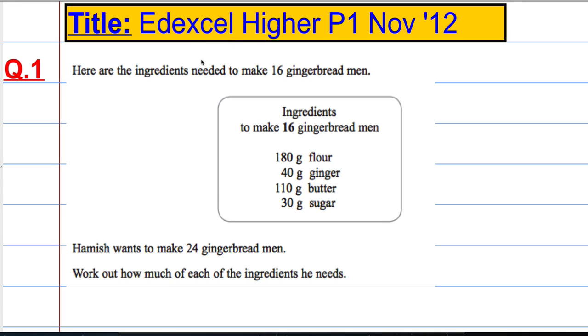Okay, here we go with the Edexcel Higher Paper 1 from November 2012, question 1. Here are the ingredients needed to make 16 gingerbread men, and the ingredients are given below. It says Hamish wants to make 24 gingerbread men. Work out how much of each of the ingredients he needs.